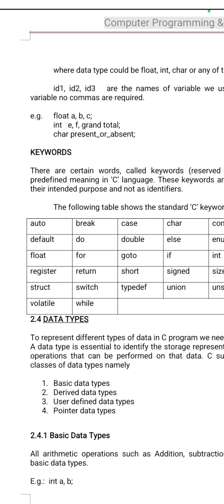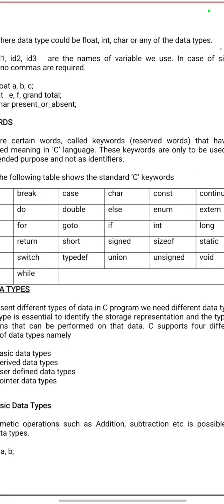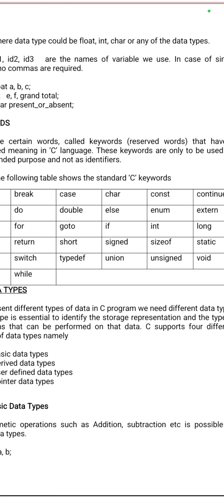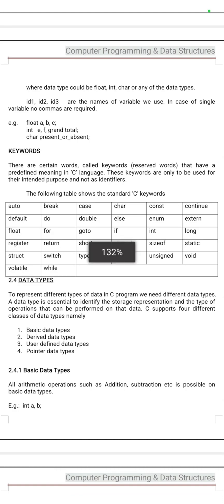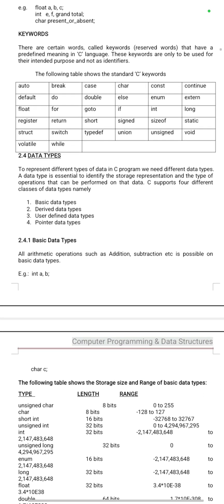Examples of keywords are: auto, break, case, if, for loop, while loop, typedef, switch. Those are the examples of keywords — also known as reserved words.